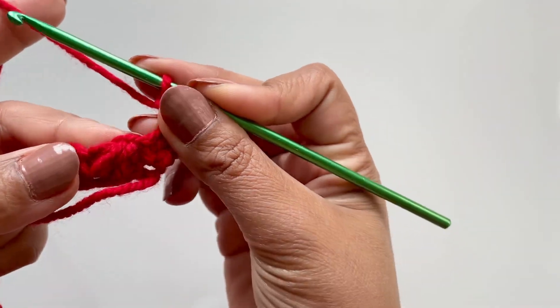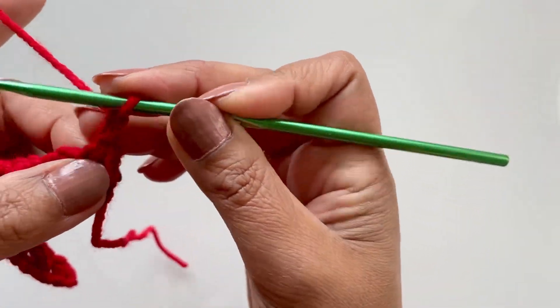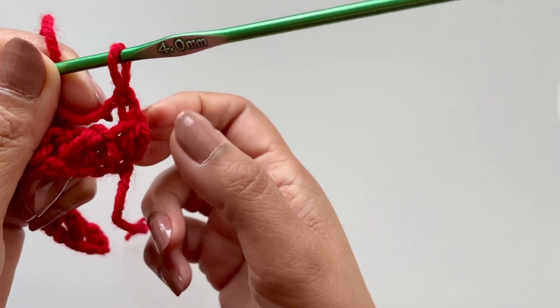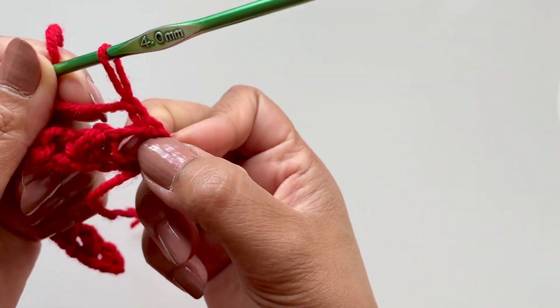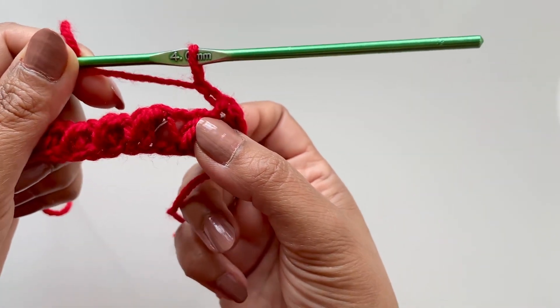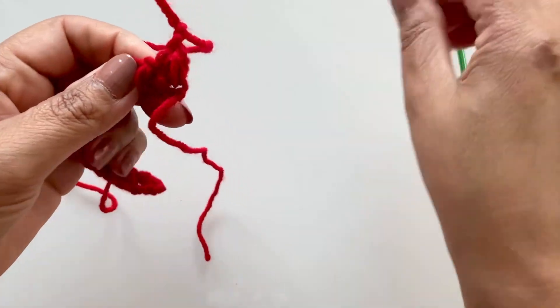Now this is where it gets, it's not tricky, but you just need to figure out where. So this is the little cluster thing that we did, and on the side of it, you'll always get this little triangle. Can you see them? There's another one there. Put this hook down, I'll show you properly.